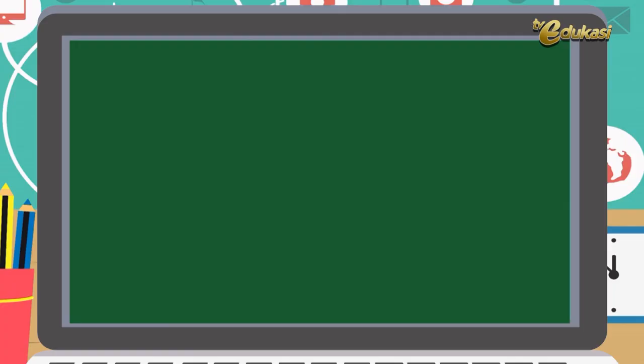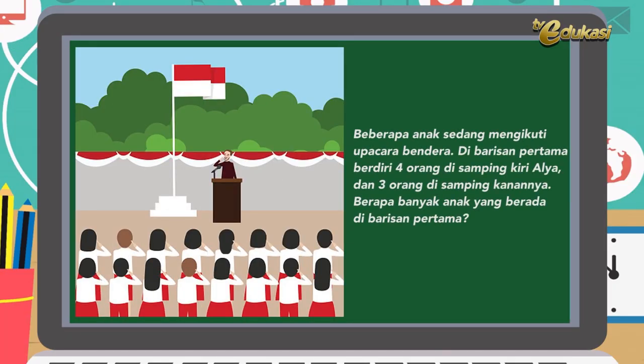Sekarang Bapak akan menerangkan tentang soal urutan bilangan yang mengandung nilai HOTS, atau Higher Order Thinking Skill, atau cara berpikir tingkat tinggi. Mari kita lihat soal berikut ini. Beberapa anak sedang mengikuti upacara bendera. Di barisan pertama berdiri 4 orang di samping kiri Alia dan 3 orang di samping kanannya. Berapa banyak anak yang berada di barisan pertama?